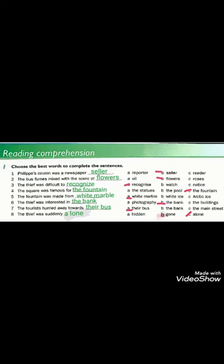Four, the square was famous for A, the statues, B, the pool, or C, the fountain. The square was famous for the fountain. كانت الساحة مشهورة بالنافورة. Five, the fountain was made from A, white marble, B, white ice, or C, arctic ice. The fountain was made from white marble. كانت النافورة مصنوعة من الرخام الأبيض.